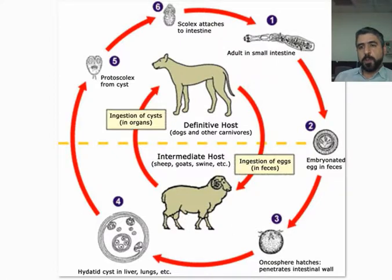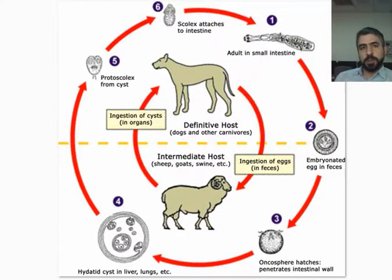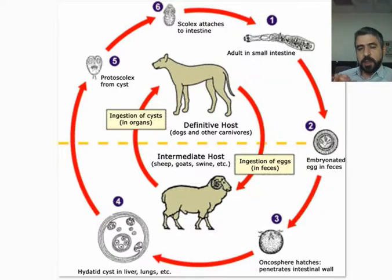Today we are going to talk about a very common disease, especially in the Middle East area — that is the Hydatid cyst, or Echinococcus. Echinococcus is a parasite in which the definitive host is dogs and foxes, while the intermediate host is sheep. When a human comes in between, the human becomes an intermediate host.